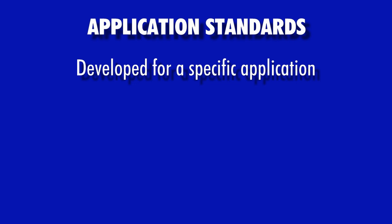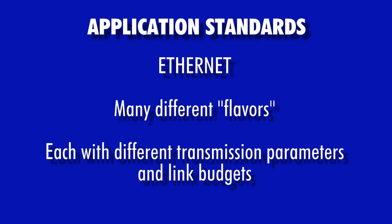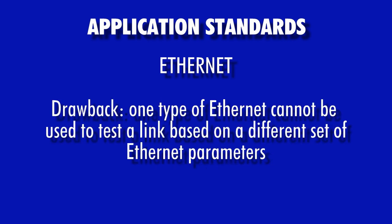Application standards are developed with only a specific application in mind. Ethernet is perhaps the most well-known set of networking applications in the information transport systems industry. There are many flavors of Ethernet, each with a different set of transmission parameters, and thus each with a specific link budget. The drawback to using an application standard is that it can only be used to test a fiber for that one and only application, for example 1000 base SX. The advantage is that any 1000 base SX link can be tested as long as the physical cabling does not exceed certain maximums, typically fiber length.